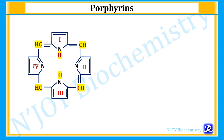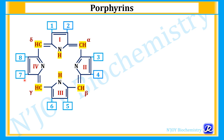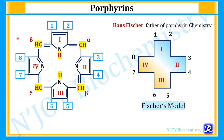Porphyrins have four pyrrole rings — 1, 2, 3 and 4 — linked by four methenyl bridges: alpha, beta, gamma and delta, and they have eight substitution groups 1 through 8. Hans Fischer, the father of porphyrin chemistry, proposed a shorthand model for presentation of porphyrin structure. According to that model, each pyrrole ring is represented as a bracket, and thus porphyrin is made up of four closed brackets with eight substitution positions 1 through 8. This is Fischer's model for porphyrin structure.